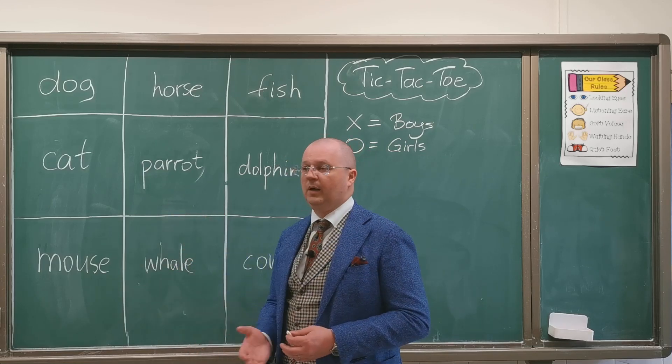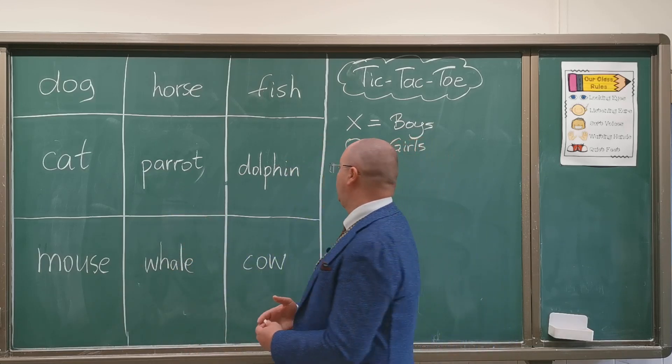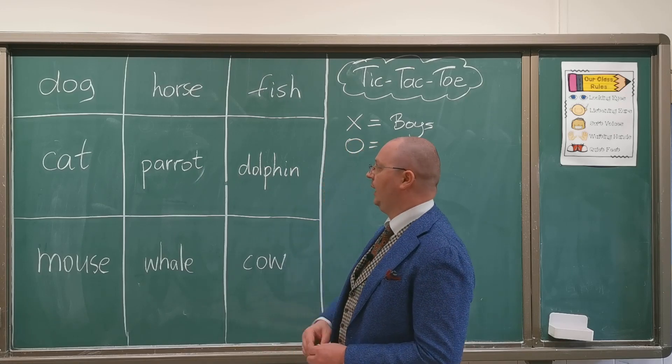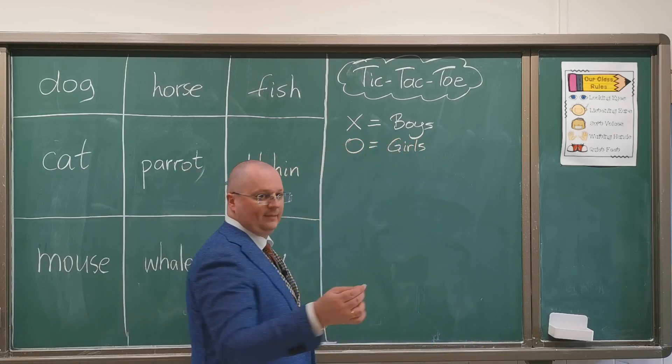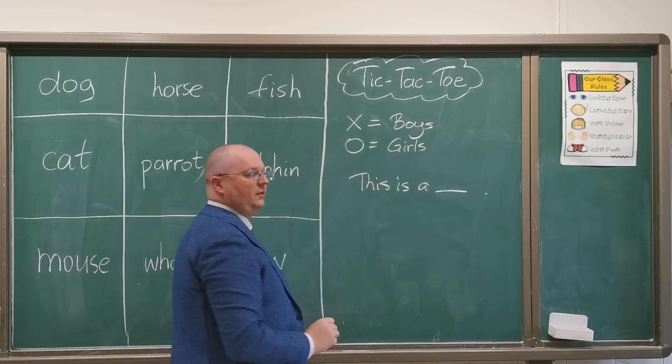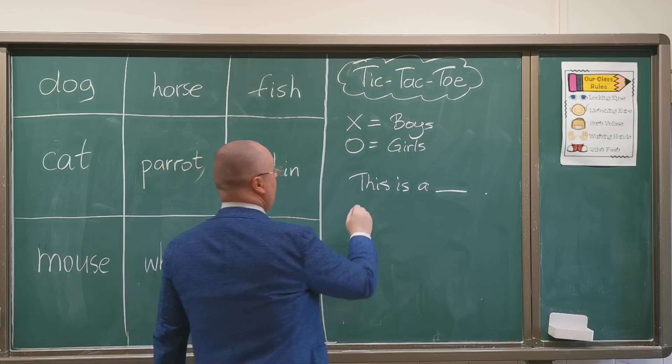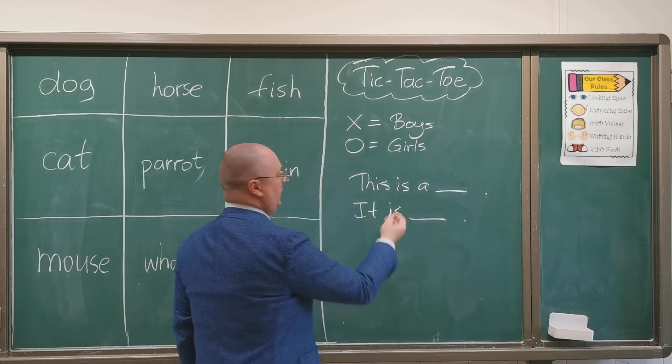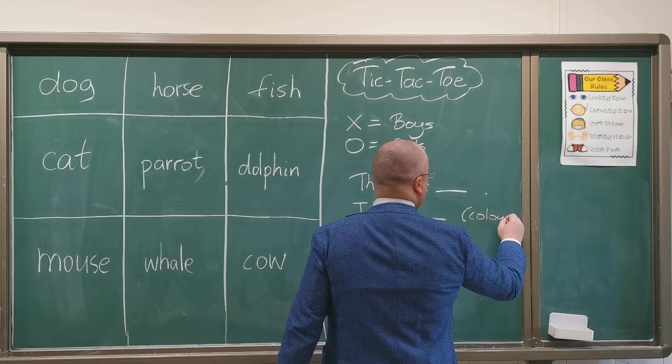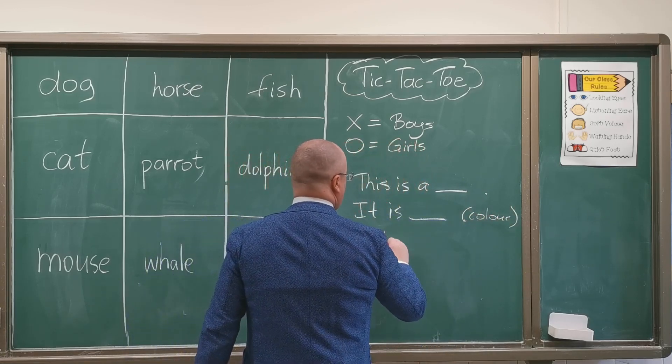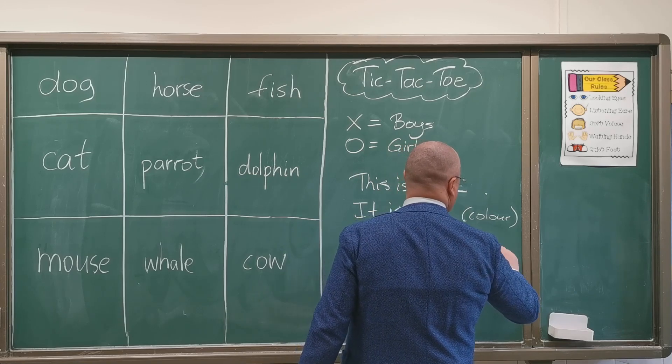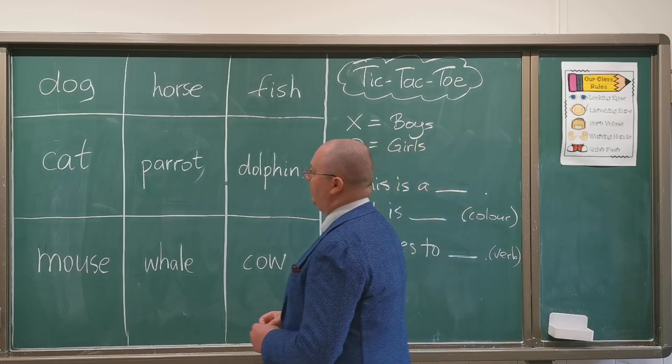Or you can just ask them to make a few sentences. For example, if you want them just to produce a few sentences, you can also write down the structures here, like for example three sentences. And they would say, this is... let me show it to you. So this is a, then it is, then for example here they would need to say color, and it likes to, and here they would need to use a verb.